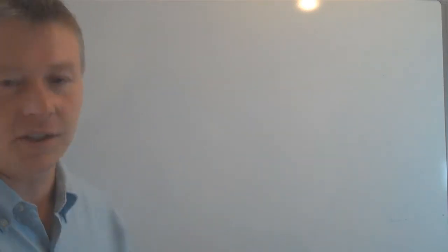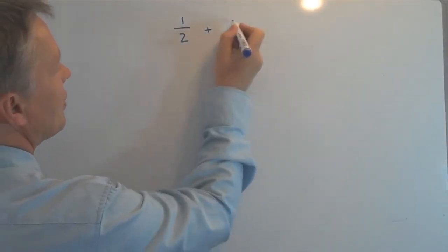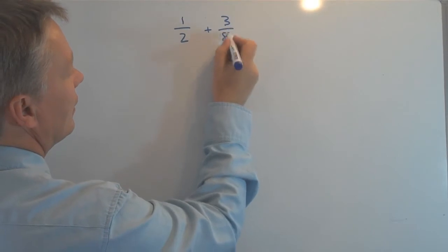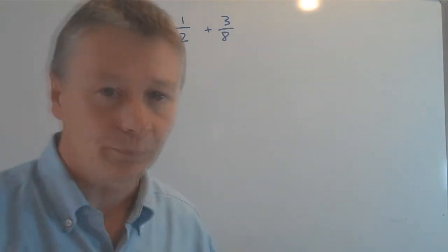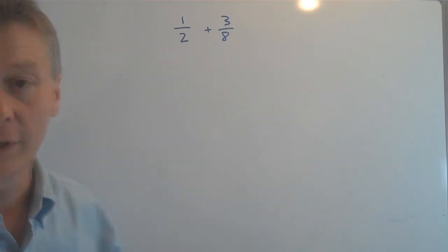So in other words, if we had something like a half plus three-eighths, and what we need to know is the total of a half plus three-eighths.